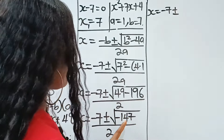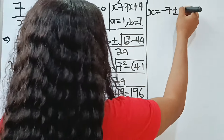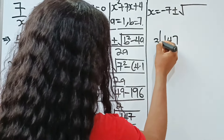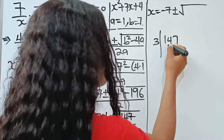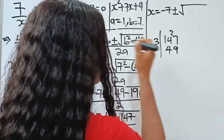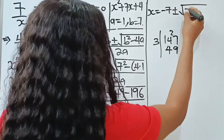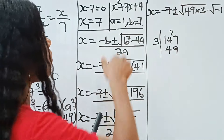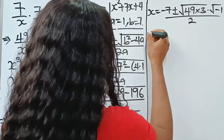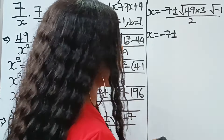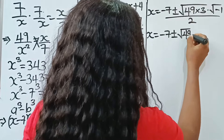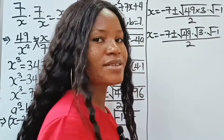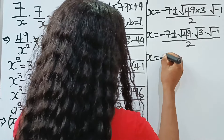So our x equals negative 7 plus or minus the square root of negative 147, divided by 2. Let's break down 147: its smallest factor apart from 1 is 3. We can write 147 as 49 times 3. So the square root of negative 147 becomes the square root of 49 times 3 times negative 1, which gives us square root of 49 times square root of 3 times square root of negative 1, divided by 2.